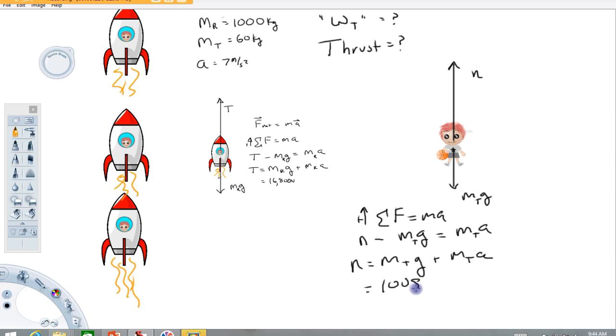1008 newtons of force for the normal force between Timmy's feet and the ground. Now as far as answering the question, what is his apparent weight? If you're standing on a bathroom scale, if there were a scale here, the normal, the scale reads the normal force between your feet and the scale. So this is what the scale would read and therefore that is what I would call Timmy's apparent weight while accelerating up on the rocket.